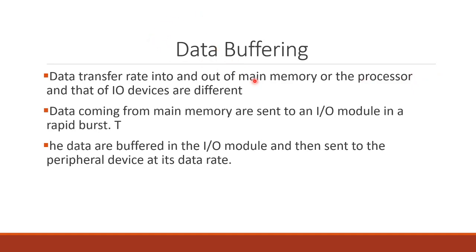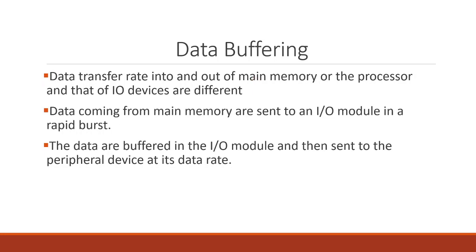Next is data buffering. We use buffer registers. There is a difference in speed — the data transfer rate in main memory is high, while the processor's data transfer rate is high but the IO device is slow. Data coming from main memory is sent to the IO module in a rapid burst, and that is the data transfer rate speed difference.